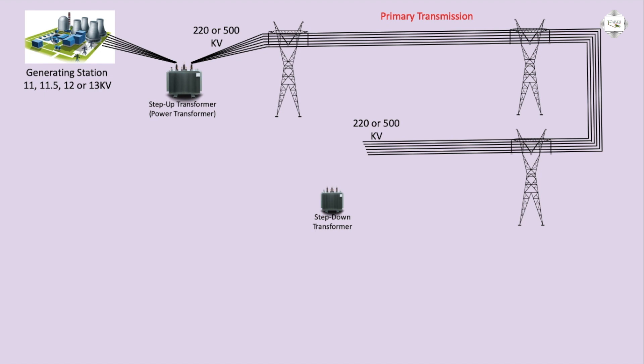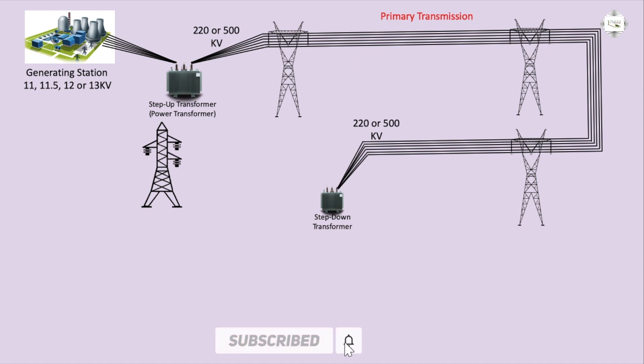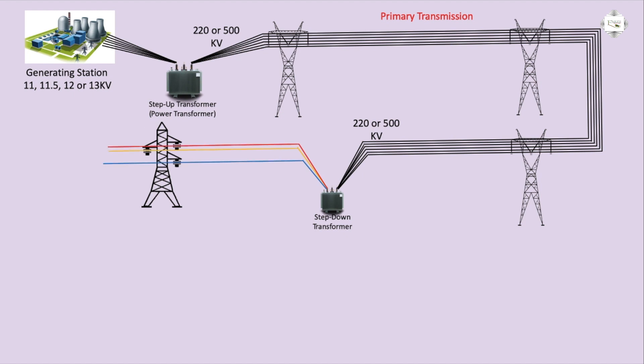Transmission line to step-up transformer input, outgoing to red, yellow, blue three-phase line. Transmission station — transmission line carries power over long distances. Primary transmission line outgoing step-down to 220 kV or 500 kV input, then outgoing at 132 kV or 66 kV voltage to the secondary transmission line.